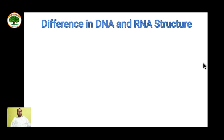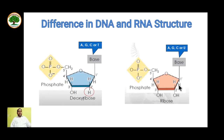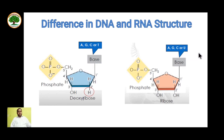Let's see the basic difference in DNA and RNA structure. In RNA, at the second position, there is a presence of an OH group which is absent in DNA. That sugar is called deoxyribose sugar in DNA and ribose sugar in RNA. The other difference is the presence of thymine in DNA and uracil in RNA; the rest of the bases remain the same.